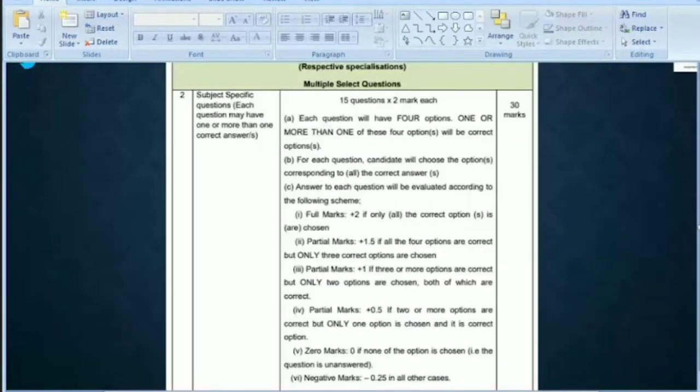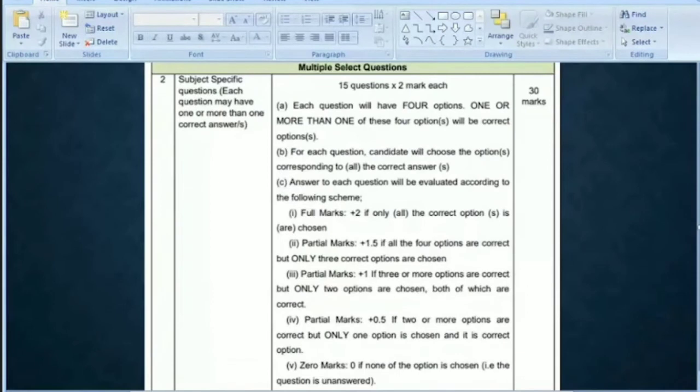Then we have subject-specific questions, which is Part B of Paper 1, where we have 15 questions at 2 marks each. Each question will have 4 options, and one or more than one of these 4 options will be correct. So there can be multiple correct options.